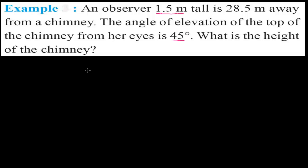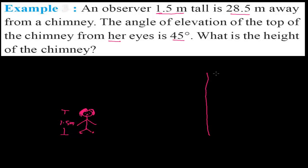First of all, we have to picturize this sentence — what exactly it means. An observer of 1.5 meters tall: suppose this is my observer, something like this. It means it is a girl, right? Suppose this girl is 1.5 meters tall. And there is a chimney over here — suppose this is the chimney, with smoke coming from the top.